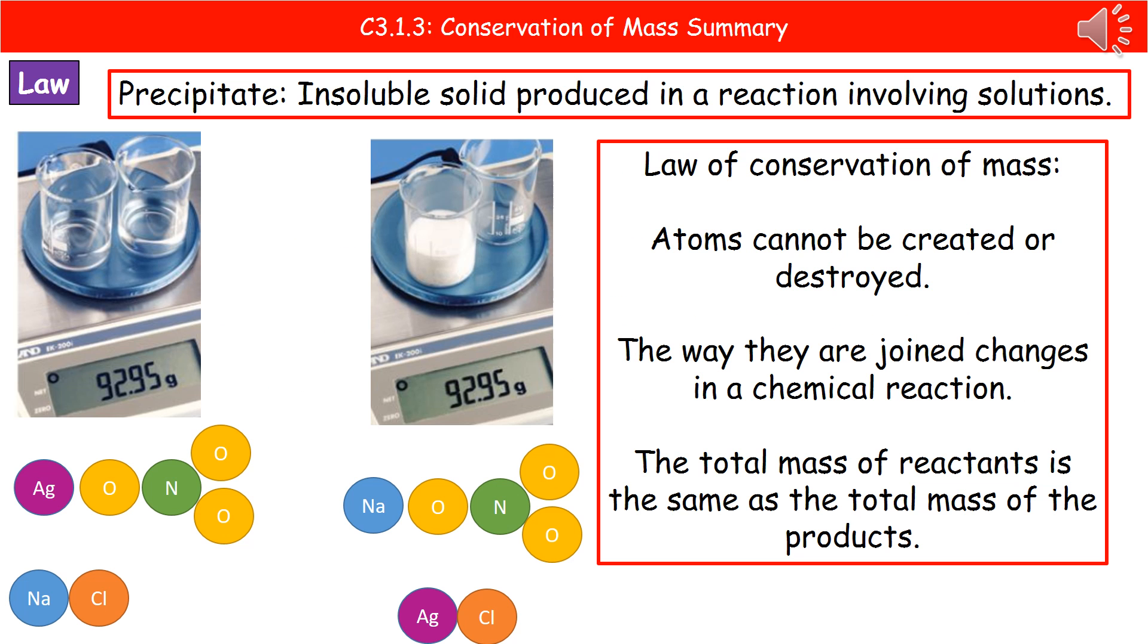If we consider an example of where we could see this, then one of the key reactions that we could demonstrate this with is a precipitation reaction. So on the balance on the left hand side there, we've got two chemicals: silver nitrate and sodium chloride. And you can see on the actual scales there that we've got a mass of 92.95 grams in total.